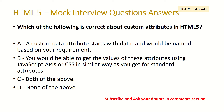Question 2: Which of the following is correct about custom attributes in HTML5? A: A custom data attribute starts with 'data-' and would be named based on your requirement. B: You can get the values of these attributes using JavaScript APIs or CSS, similar to standard attributes. C: Both of the above. The answer is both of the above. You can define them using 'data-' like data-toggle, data-collapse, and process them in JavaScript just like any other attribute.